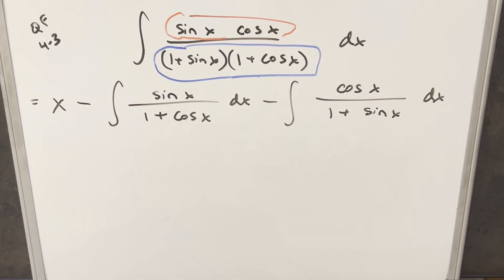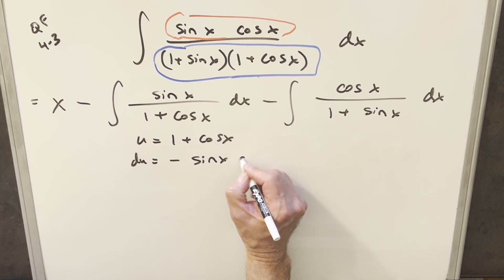Okay, now from here, what I can do is a u-substitution on each of these. So we'll do separate u-substitutions here. We'll do u equals 1 plus cosine x.